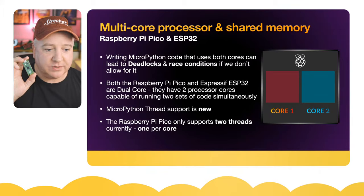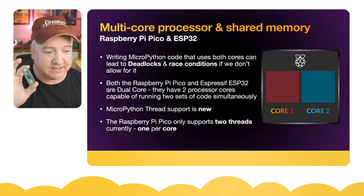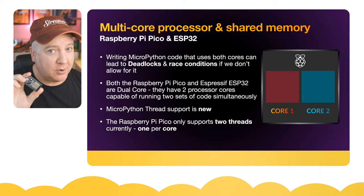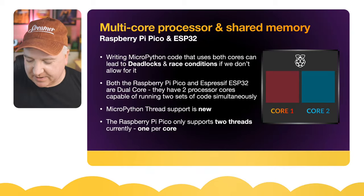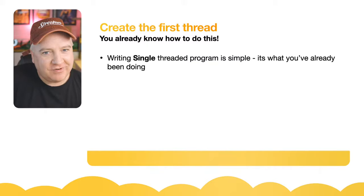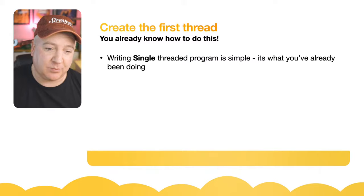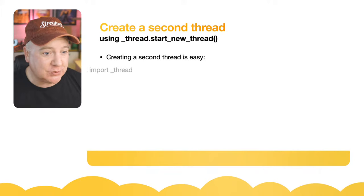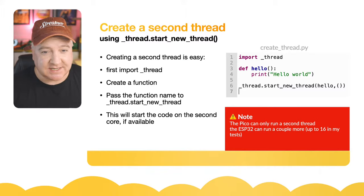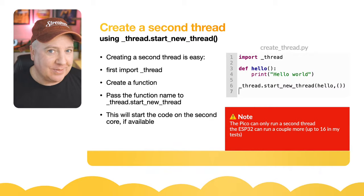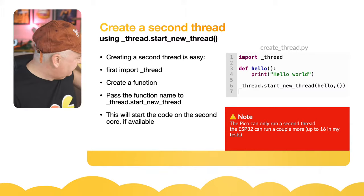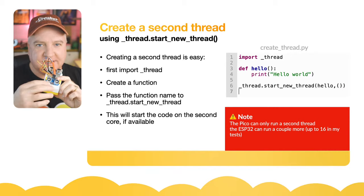One key difference: the Raspberry Pi Pico only supports two threads - one per core. The ESP32 can run quite a number of threads, more than one per core - we'll experiment with just how many shortly. Creating your first thread - if you just write a simple MicroPython program you're already writing a single-threaded program. To create a program with two threads we use the `_thread` library. To start a new thread: `_thread.start_new_thread()`, passing the function name and any arguments in the second parameter.